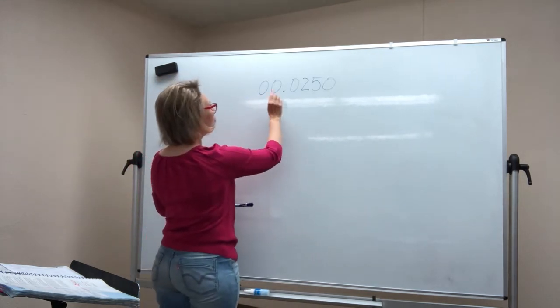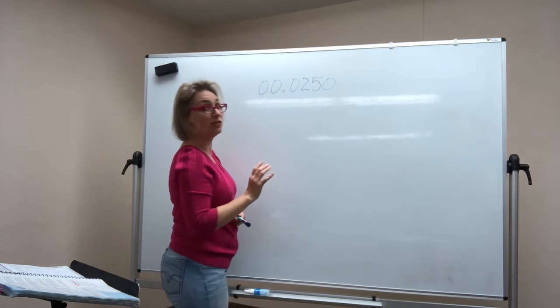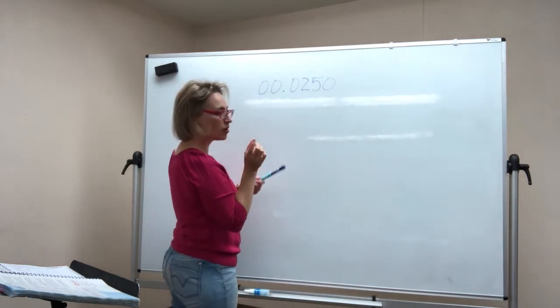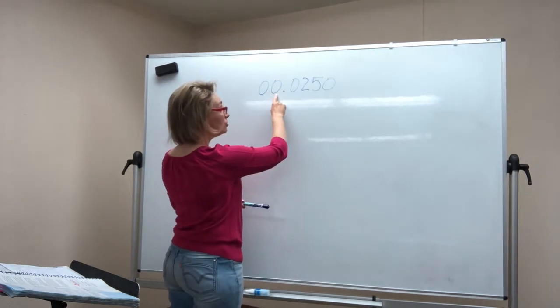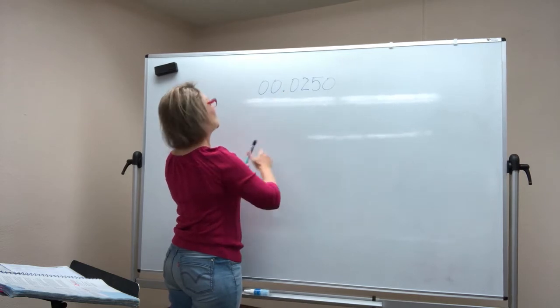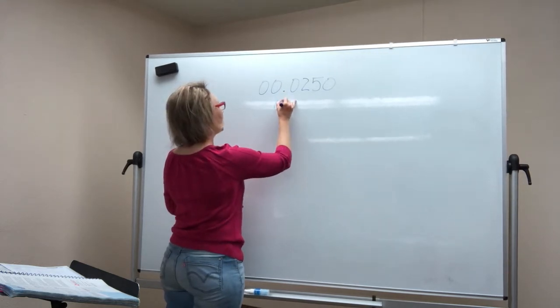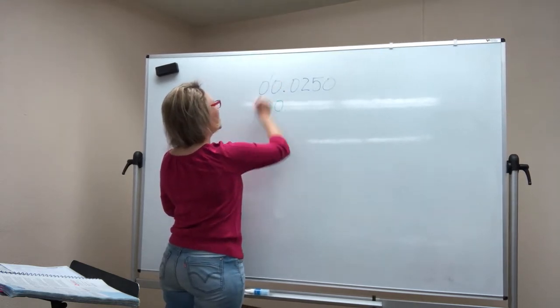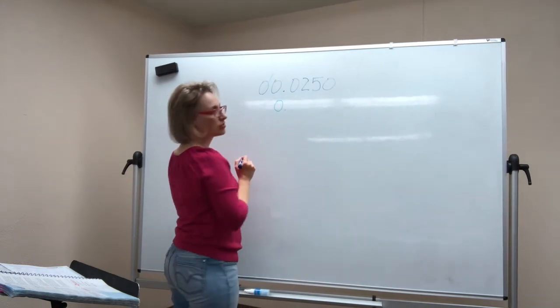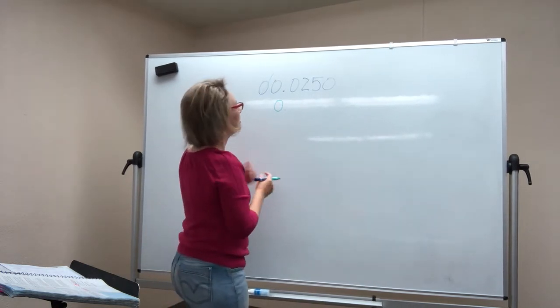You need to have if there is no whole number, it's a number smaller than one. If there's no whole number you do need to have a zero before the decimal. So you have to have that one right there but you don't need that one. That one is useless. It's unnecessary. Just makes it confusing.